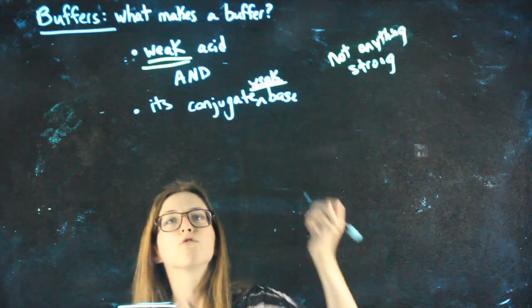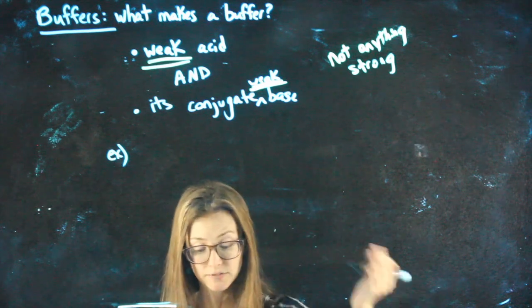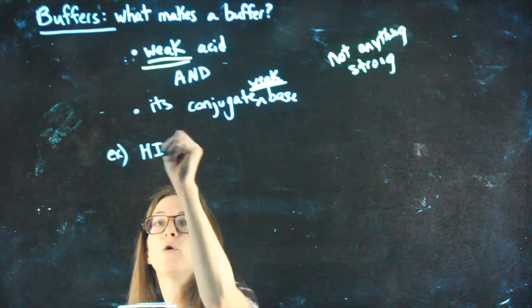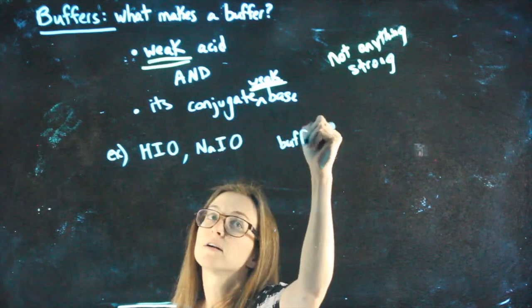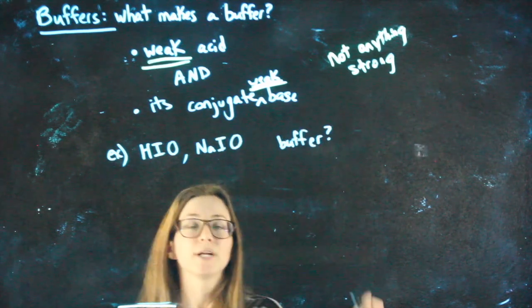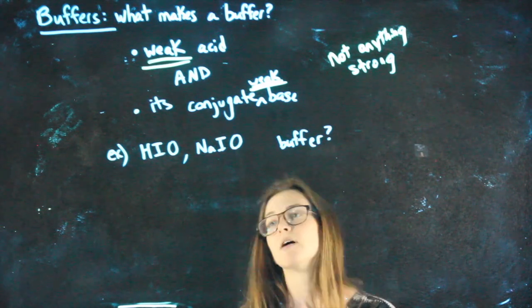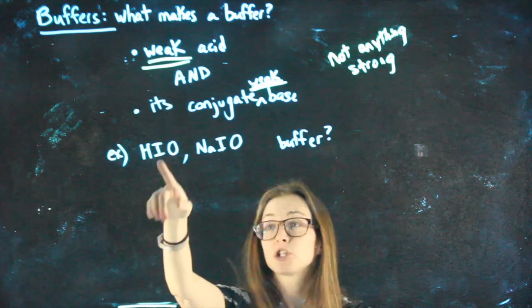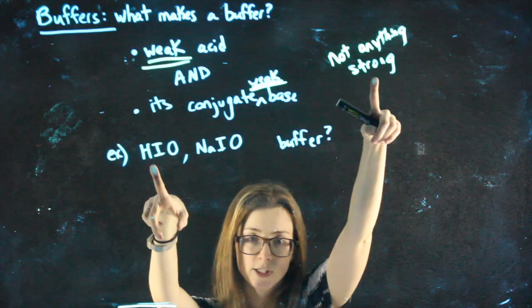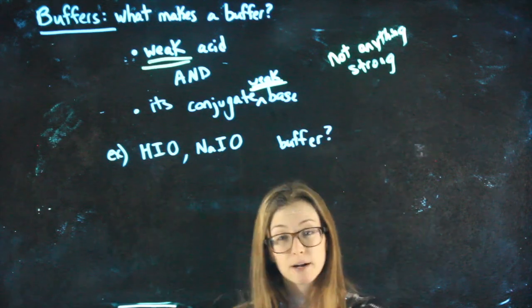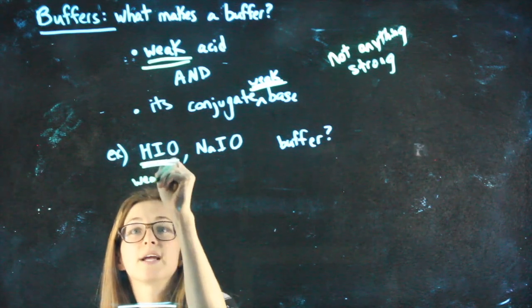For example, I could ask you, will the following make a buffer? HIO and NaIO. Will it be a buffer? And so, we need to look for, do I have a weak acid? And, once I have that weak acid, do I have its conjugate? HIO starts with an H. Good idea that it's an acid. It's not strong. It's not on the list I memorized. I could double-check by looking at my Ka-Kb chart. And yes, this is a weak acid.